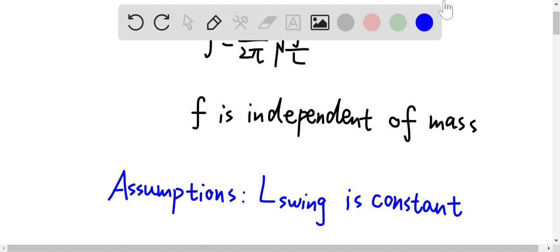The assumption we have made is that the length of the swing hasn't changed in both cases, which means that the length of the swing is constant.